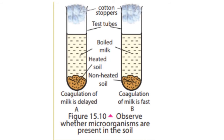Take a soil sample and divide it into two equal portions. Heat one portion for about five minutes on a metal plate. Add the heated soil sample to one test tube with milk, and add the non-heated soil sample to the other test tube. Fix cotton stoppers to both test tubes — air can enter but microorganisms cannot. Observe the tubes hourly and record your observations.